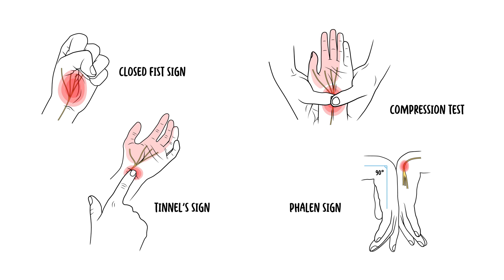In summary, the carpal tunnel is a narrow passageway that allows tendons and the median nerve to pass from the forearm to the palm. However, the median nerve can be compressed due to a variety of risk factors and conditions, leading to carpal tunnel syndrome, which manifests as numbness, pain, and altered sensation in the lateral three and a half digits — the thumb, the index finger, the middle finger, and half of the ring finger. Treatment includes conservative and surgical management. Thank you for watching.